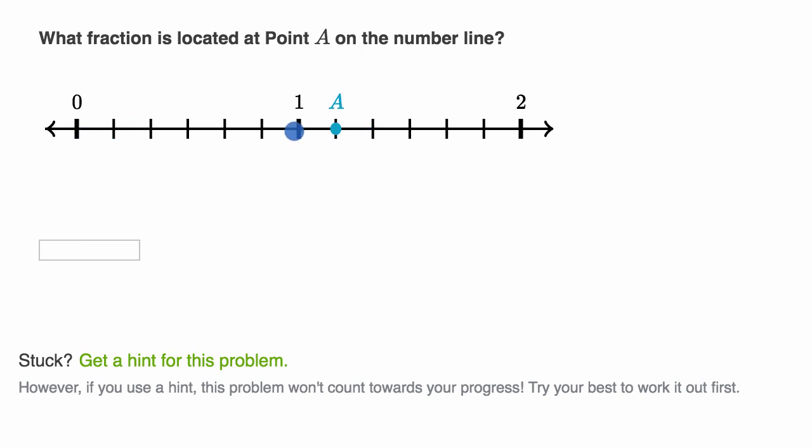All right. So between the whole numbers, how many spaces, equal spaces, do we have? It looks like we have one, two, three, four, five, six equal spaces. So things are divided into sixths.